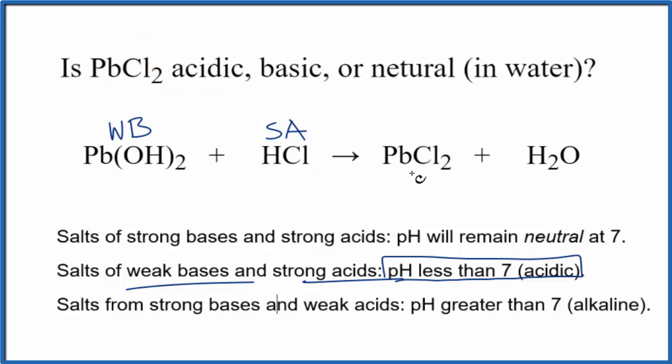We should note that PbCl2 isn't very soluble. If you look this up on a solubility table, it would say slightly soluble. So a little bit of it's going to dissolve, but not a whole lot. Still, that's enough to make the pH be less than 7.